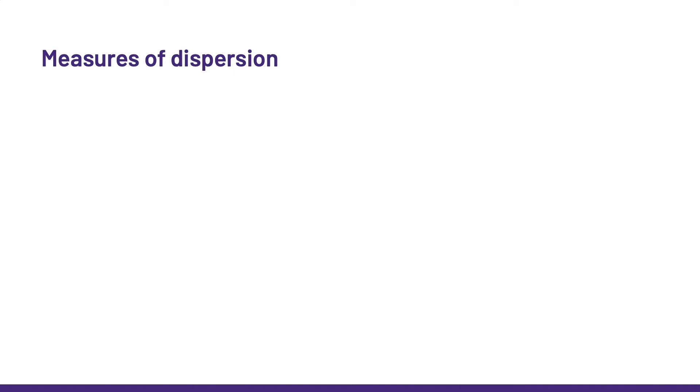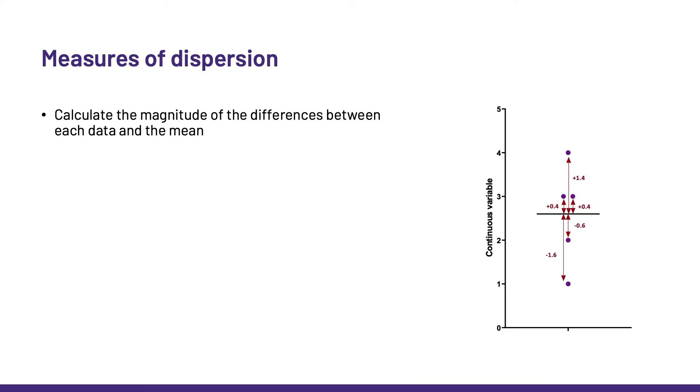OK, the easiest way to calculate the dispersion of our data around the mean is to calculate the magnitude of the differences between each data point and the mean. And then we add the differences up, and the bigger the sum, the worse the mean is at summarizing the data. However, if we do that, we get zero, because the differences, being positive and negative, cancel each other out. So, that is not very useful.